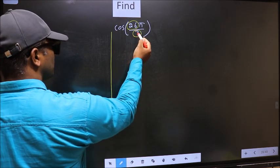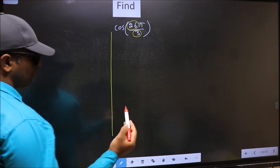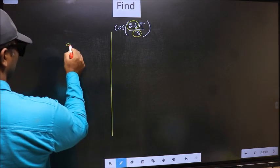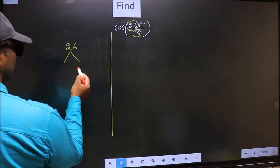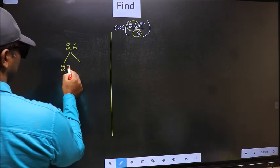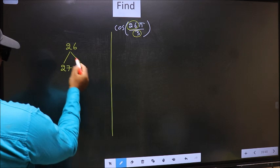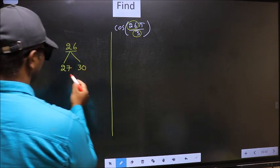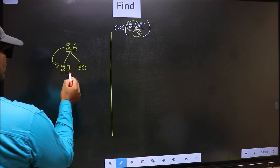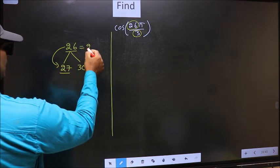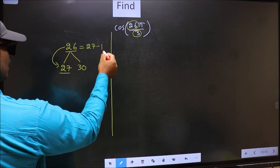26 is close to which multiple of 3? What I mean is, 26 and here you write multiples of 3, that is 27 and 30. So now 26 is close to which number? This is close to 27. So 26 should be written as 27 minus 1.